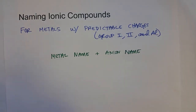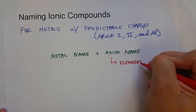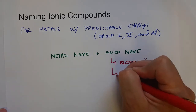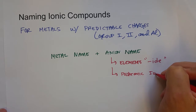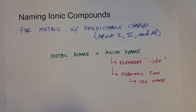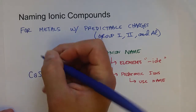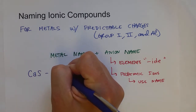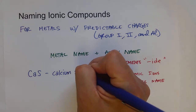The two scenarios for anions are: elemental anions, which have the -ide suffix, or polyatomic ions. For instance, calcium is a group two metal, so we say the metal name 'calcium,' and then sulfur changes its name with the -ide suffix — so that compound is calcium sulfide.